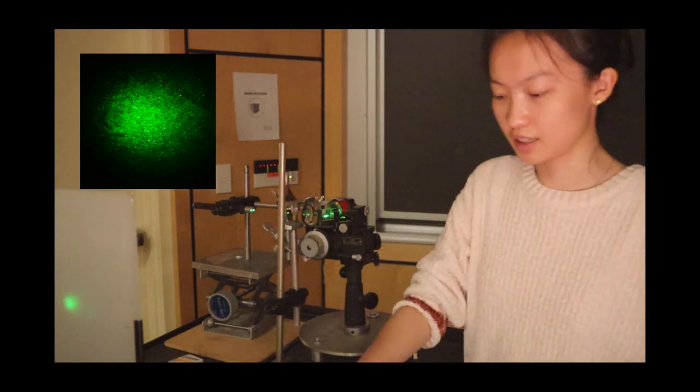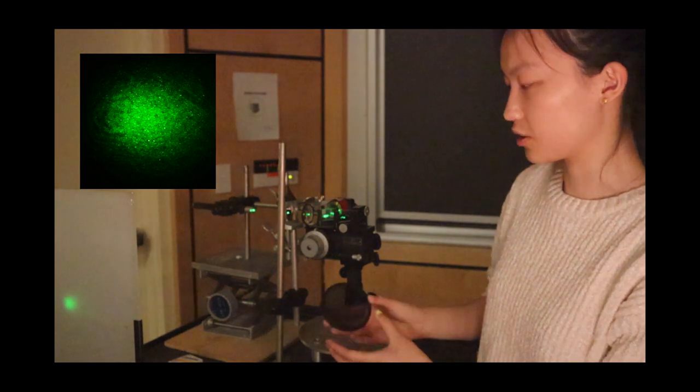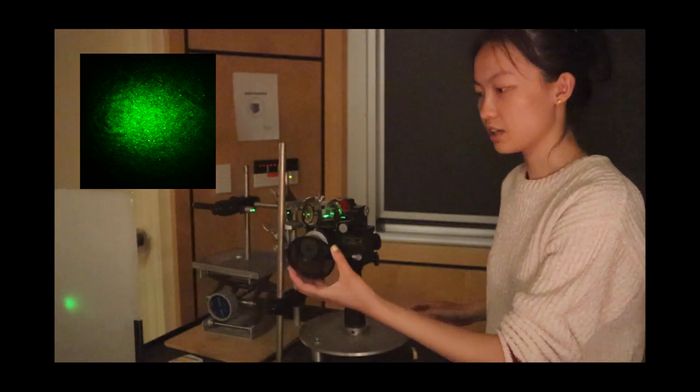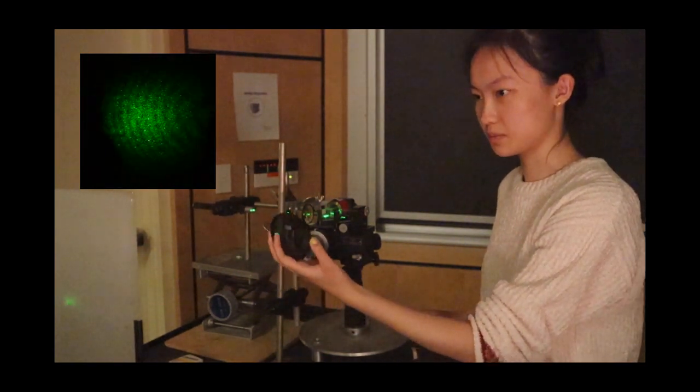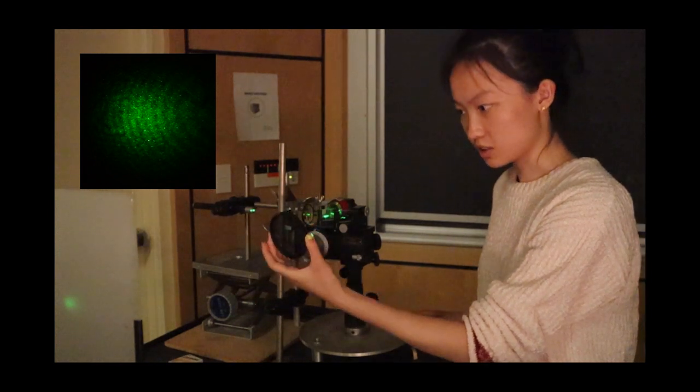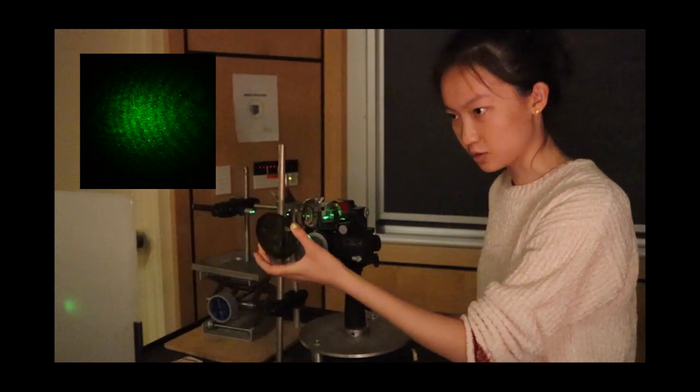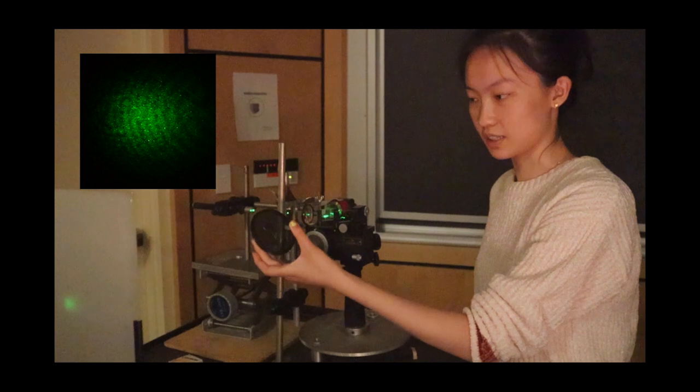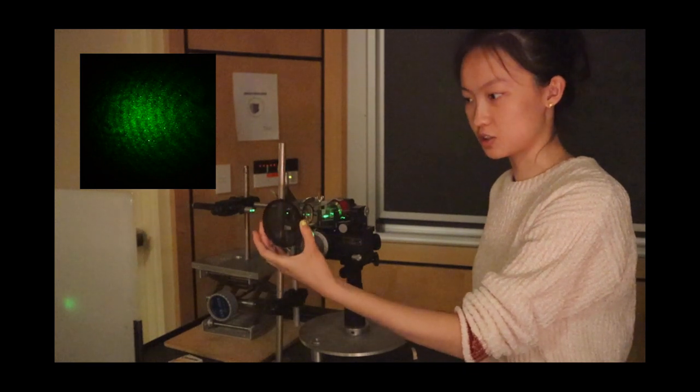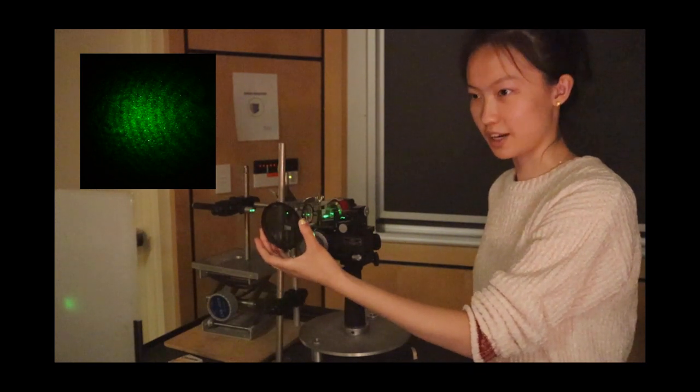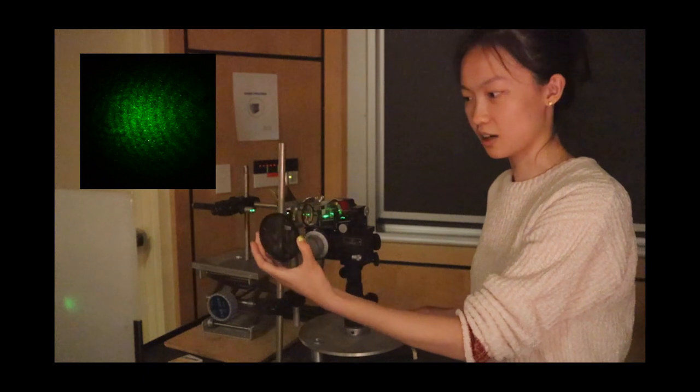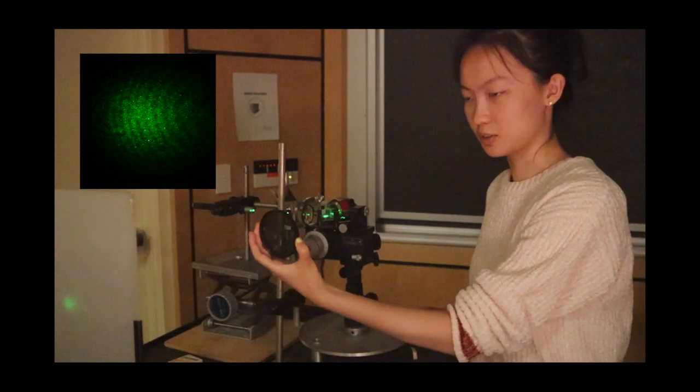Now we can use this circular polarizer. We can put this in front of the combined beams of A and B. Observe that now you can see the rings again. This just shows you that the rings were there all along, but you can't see them.